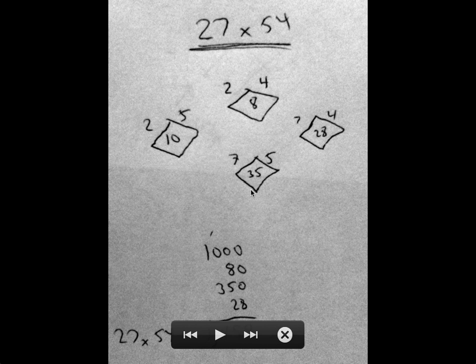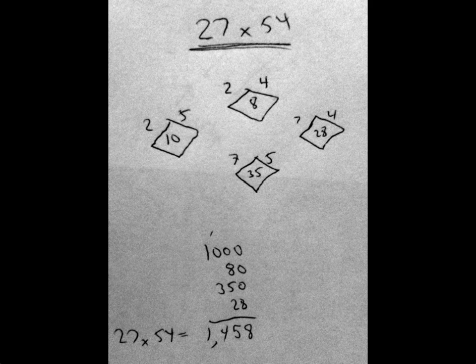Taking into account, these are both in the tens column. And then lastly, you have seven times four, 28. So that's multiplying out the individual digits to come up with the individual contributions. You add all of those terms up, 1000 plus 80 plus 350 plus 28. And you come up with the correct answer, which is 1458.